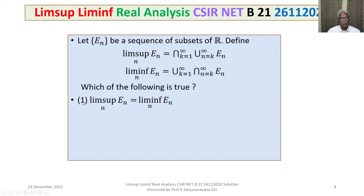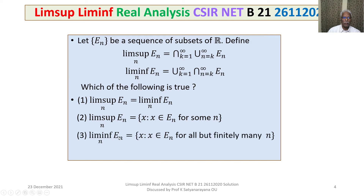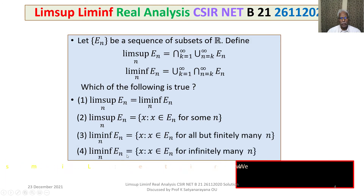Option 1: Limit superior En equals limit inferior En. Option 2: Limit superior En is the set of all those elements x such that x belongs to En for some n. Option 3: Limit inferior En equals the set of all those elements x such that x belongs to En for all but finitely many n. Option 4: Limit inferior En equals the set of all those elements x such that x belongs to En for infinitely many n.